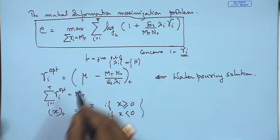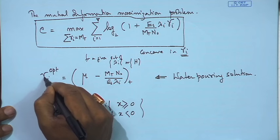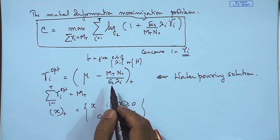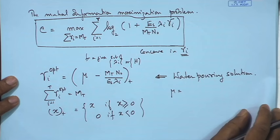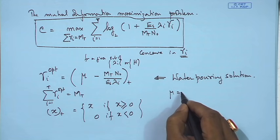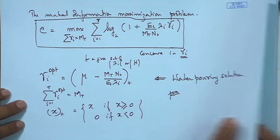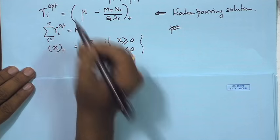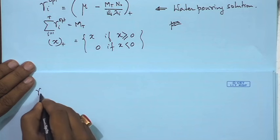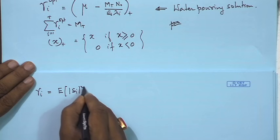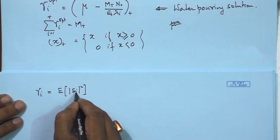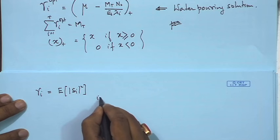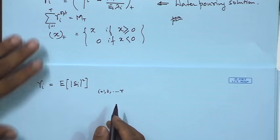The exact derivation steps will be attached alongside the videos so you can follow through and arrive at this expression. To understand what this means intuitively: γ_i^{opt} = μ − 1/(E_s·λ_i/(m_t·N_0)). Here μ is some constant and γ_i represents power distribution among transmitted symbols i = 1 to r, indicating different modes of the channel.